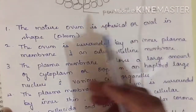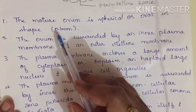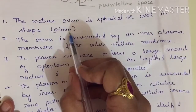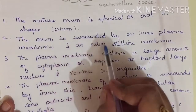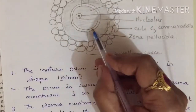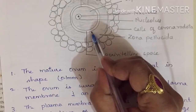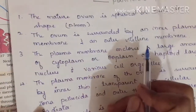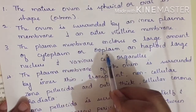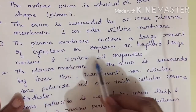The mature ovum is spherical or oval in shape and its size is 0.1 millimeter. The ovum is surrounded by an inner plasma membrane and an outer vitelline membrane. The plasma membrane includes a large amount of cytoplasm, or ooplasm, and there is a haploid large nucleus and various cell organelles present.